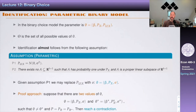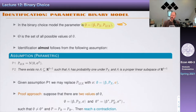In the context of the parametric binary choice model, the parameter theta has three components: beta, the distribution of X, and the distribution of U conditional on X. All three completely determine the probability of Y equals one given X in this model.